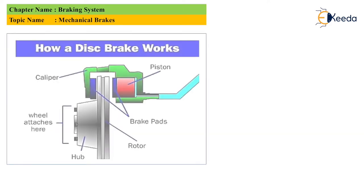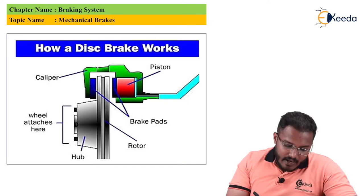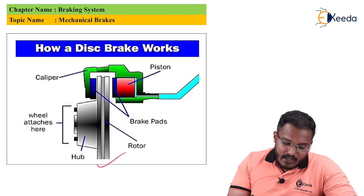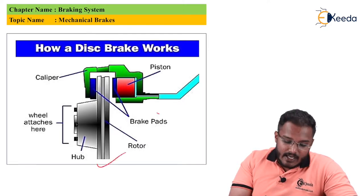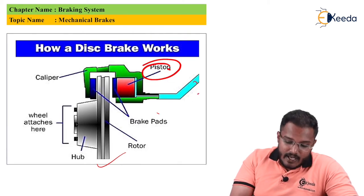Now how these brakes have worked, here we can see in the diagram portion that the main one is the hub portion. There will be one rotor installed on the wheel. Brake pads will be attached on both sides of the wheel. A caliper will be there and one piston will be there.